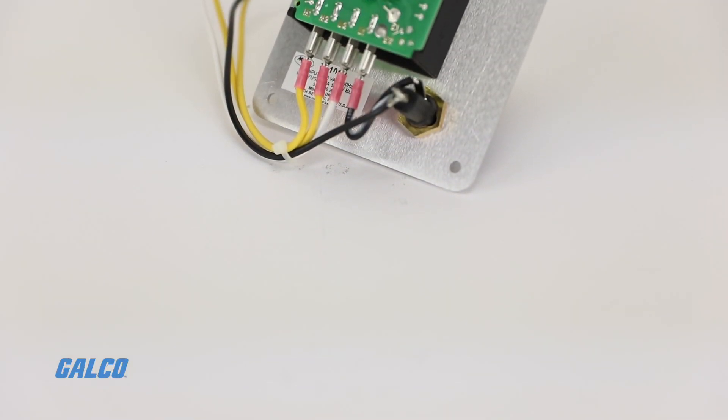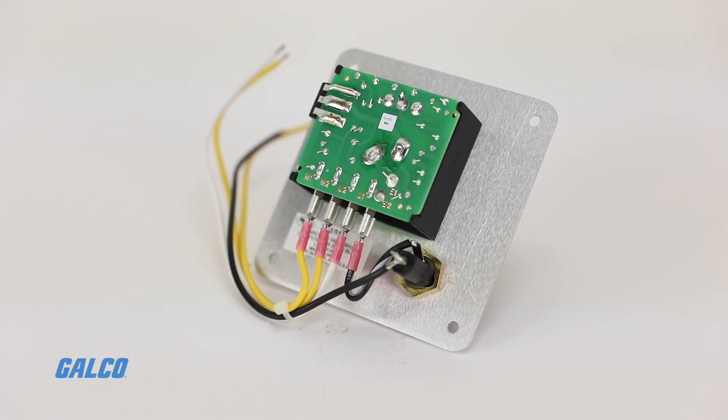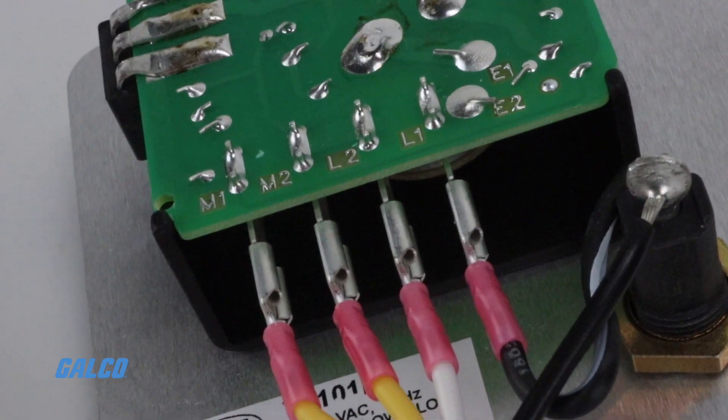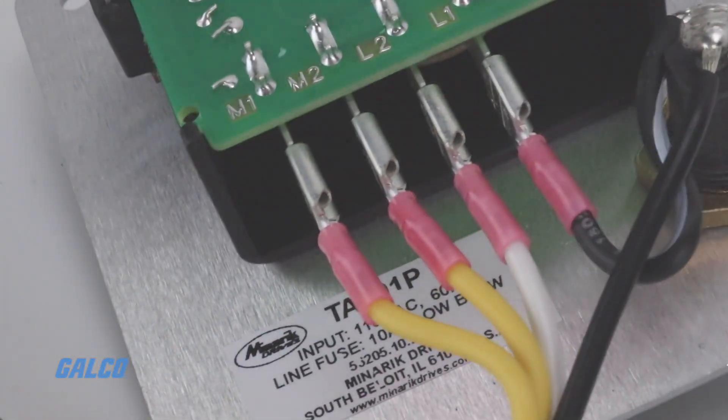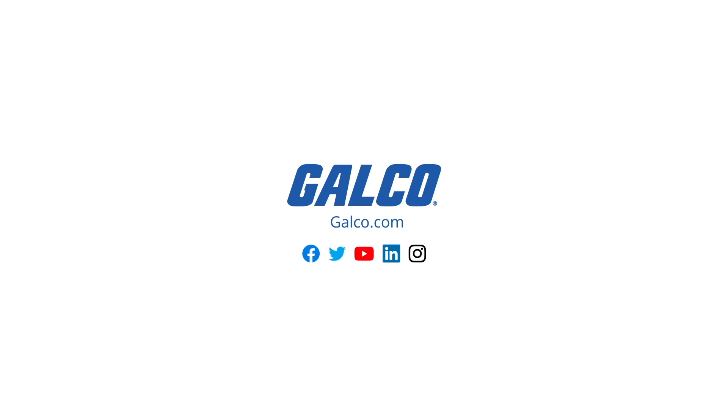Two trim pots on the back of the drive allow users to set minimum speed and IR compensation. Visit galco.com to learn more.